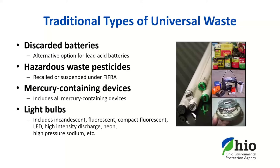There are four types of universal waste recognized nationwide. First, discarded batteries, including hazardous waste batteries such as nickel cadmium batteries and spent lead-acid batteries. Second, hazardous waste pesticides that are either suspended or recalled under Section 6 of the Federal Insecticide, Fungicide, and Rodenticide Act — they can be suspended or canceled as part of a voluntary recall or collected in waste pesticide programs. Third, mercury-containing devices: a device or part of a device, excluding batteries and lamps, that contains elemental mercury integral to its function. Commonly recognized devices include thermostats, barometers, temperature and pressure gauges, and mercury switches such as light switches in automobiles.